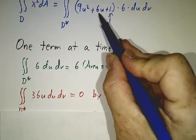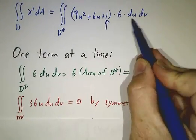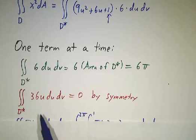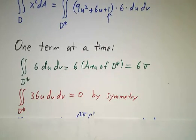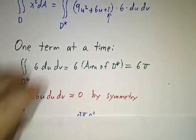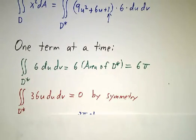The integral of 6u times 6 dU dV, that's the integral of 36u dU dV. That's 0 by symmetry. It has as much to the right of the y-axis as to the left of the y-axis. It's an odd function viewed as a function of u.